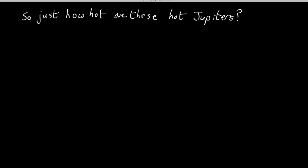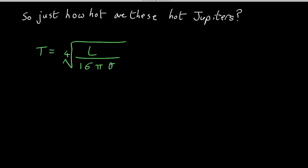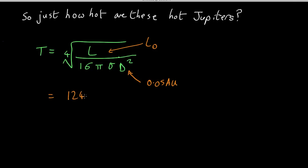If you remember, we derived an equation for the temperature of a planet in equilibrium. We balanced the radiation in from the star with the radiation out, and found the temperature is the fourth root of the luminosity of the star, all over 16π times the Stefan-Boltzmann constant sigma, times d squared, where d is the distance between the star and the planet. We can use this to work out the temperature of a hot Jupiter. Let's say we have a solar-luminosity star at 0.05 AU — plugging in the numbers we get a temperature of around 1,240 Kelvin. Pretty hot.